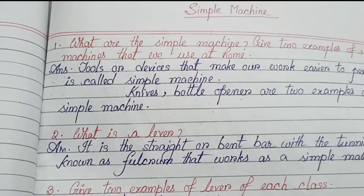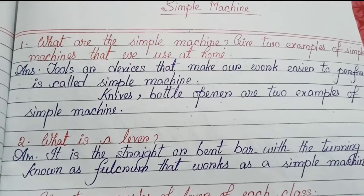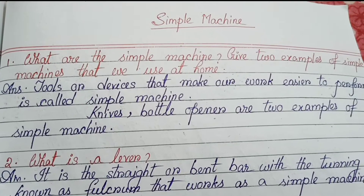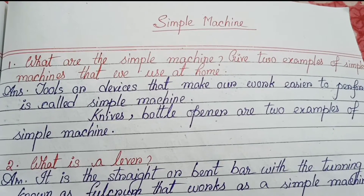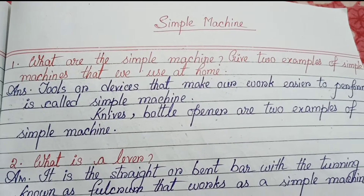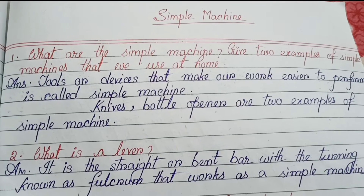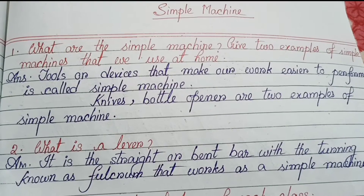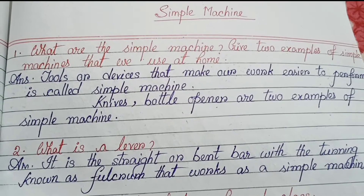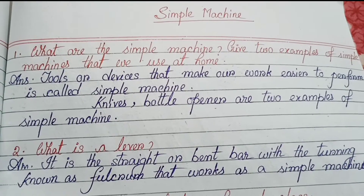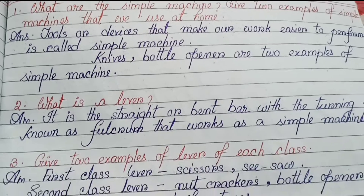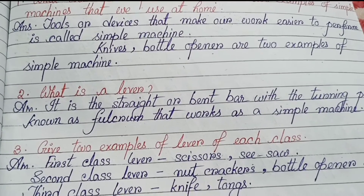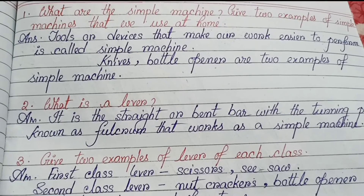Question one: What are simple machines? Give two examples of simple machines that we use at home. Tools or devices that make our work easier to perform is called simple machine. Knives and bottle opener are two examples of simple machine. Question two: What is a lever? It is the straight or bent bar with a turning point known as fulcrum that works as a simple machine.